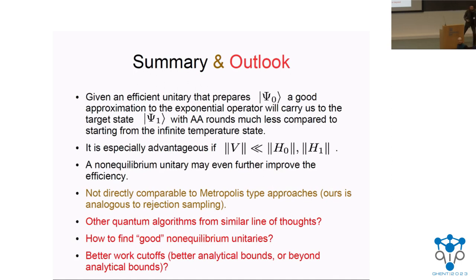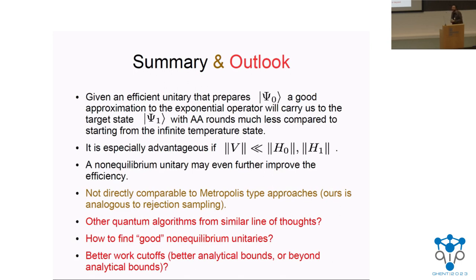Question: Do you have a specific example of how large Z₀ is? It seems too good to be true to completely get rid of the dimension dependence. Answer: Z₀ may still depend exponentially in the number of qubits — it's case-dependent. But it's all about the ratio Z₀/Z₁, not Z₀ alone.